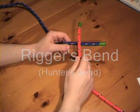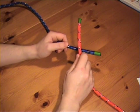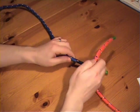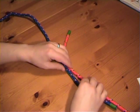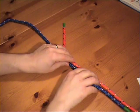Rigger's bend, also known as Hunter's bend. This is useful for joining slippery ropes together. We lay the two working ends together, side by side, but facing opposite directions.